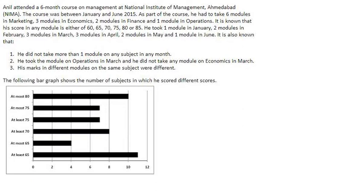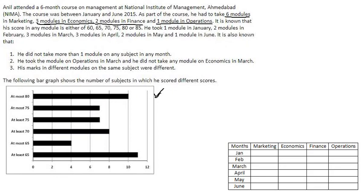His marks in different modules on the same subject were different. Now some bar graph is given. There were 6 modules in marketing, 3 modules in economics, 2 modules in finance and 1 module in operations. So let's make a table first. Since there are 6 modules in marketing and he did not take more than 1 module on any subject in any month,